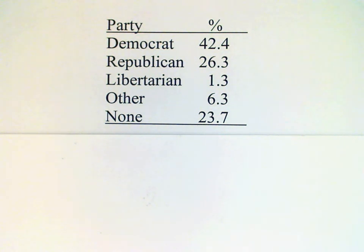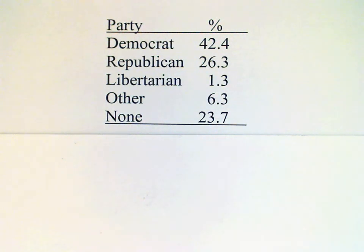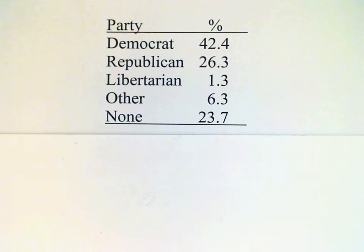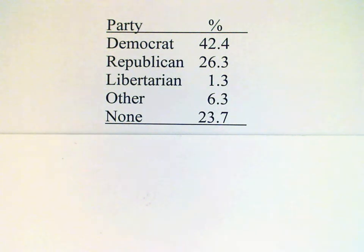For the next example, we have a table giving the political party affiliations for a certain set of voters. Our experiment is as follows: we select one person at random from this set. We want to find the probability that this person has a party affiliation. One way to do it would be to add up the percents of the voters who have a party affiliation.